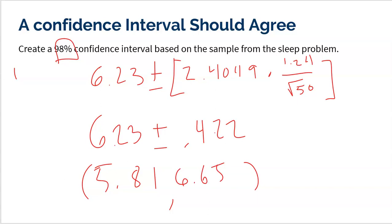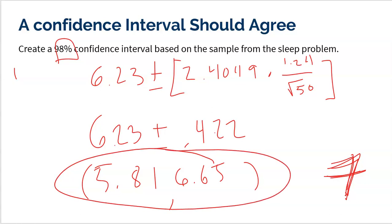This interval agrees with the test conclusion because 7 is not in the interval — it's way above our range. My interval says I'm pretty confident that students at Maggie's school get somewhere between 5.81 and 6.65 hours of sleep per night, showing they do get less than 7. This is why the confidence interval and the hypothesis test agree: they both lead to the same conclusion.